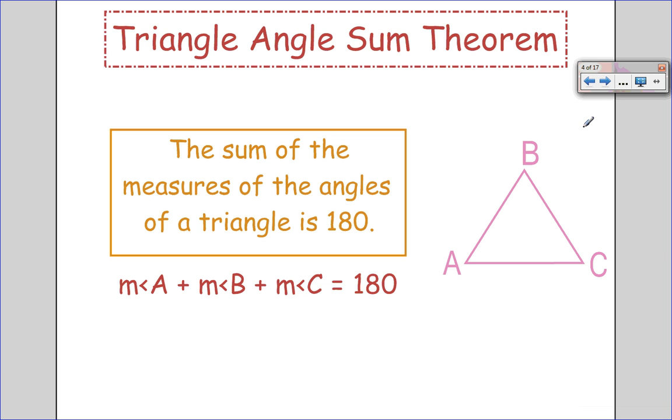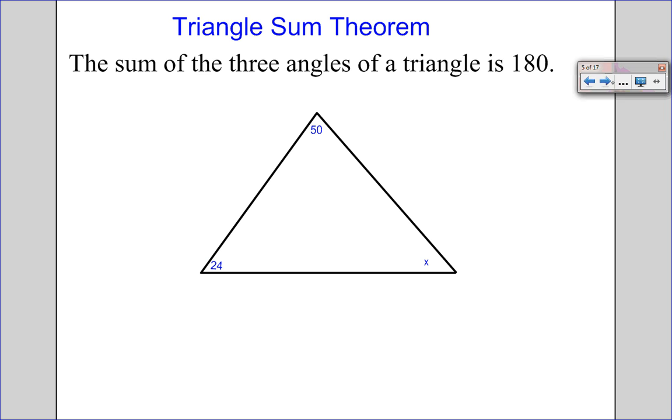The triangle angle sum theorem states that the sum of the measure of the angles of a triangle is 180, so if I add angle A and angle B and angle C, I'm going to get 180 degrees. You should remember that back from a couple years ago in middle school math. Let's try a few problems with it. For each of these, when I get to it, you should pause the video, try it out, and then come back and see if you get it right.